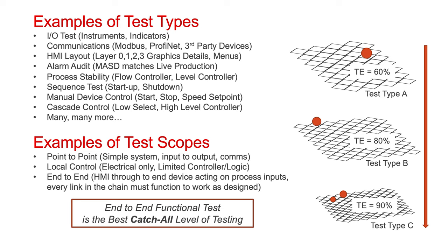Certain test scopes in automation are quite common. Point-to-point is often referred to for simple systems — input to output and checking comms, meaning the input on one side results in an output on the other. A point-to-point test with electrical wiring is also quite common. Local control tests are done generally in fields where we want to completely bypass the control system. Sometimes there are electrical switches that bypass the output run command from a controller, and in those cases we do a local control test where the local manual push button directly drives the device in question. The more interesting one is the end-to-end — all layers in the stack, everything from the HMI all the way down through to the end device acting on the process inputs. Every single link in the chain must function, otherwise the result will not work as designed.